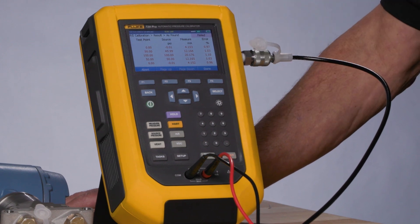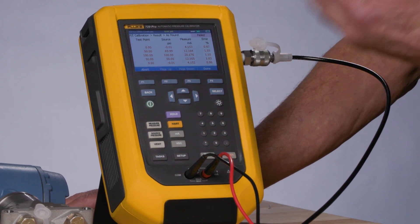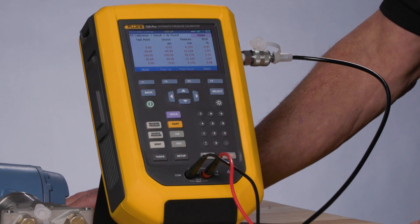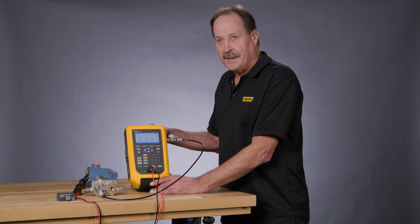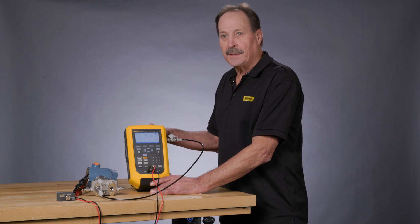So adjustment would be necessary using the HART utilities in the 729 Pro, which we'll show in a subsequent video. Thank you for your time viewing this video. For more information, please contact your local Fluke representative, or go to fluke.com and look for pressure calibration. Thank you.